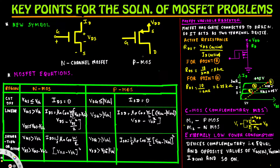Now let's look at the various operation regions for MOSFETs. There are three different regions: cutoff region, linear region, and saturation or active region. For N-MOSFET to be in cutoff region, VGS has to be less than or equal to V-threshold — in that condition, IDS is equal to zero. For P-MOSFET, VSG has to be less than or equal to V-threshold magnitude.